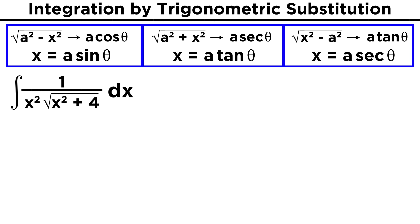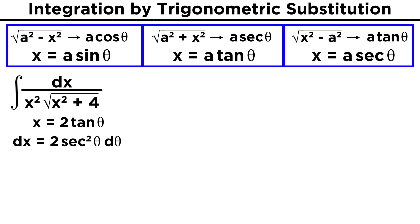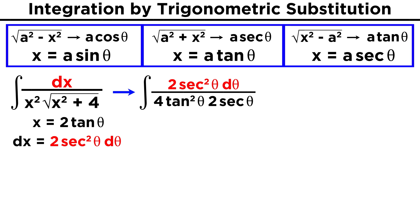How about the integral of one over the quantity x squared times root x squared plus four, dx? We recognize that this radical expression is one of the three that can be simplified by trig substitution, and with this particular expression, we allow x to be substituted by a tangent theta. In this case, if a squared is four, then a is two, so we will allow x to become two tangent theta. Finding dx over d theta will require taking the derivative of tangent, which is secant squared, and then we bring d theta up to get two secant squared theta d theta. Transforming our integral, we get two secant squared theta d theta over four tangent squared theta times two secant theta.